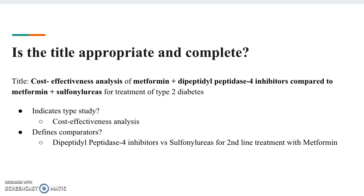The first thing while looking at this evaluation is to look at the title and determine if it is appropriate and complete. Does it indicate the type of study? It does — it's a cost-effectiveness analysis, also known as the CEA. Does it define the comparators? Yes, it's comparing DPP-4 inhibitors with sulfonylureas for second-line treatment with metformin, which is clearly stated. What is not stated is the location where this study was completed.